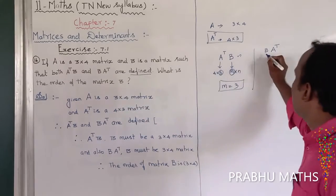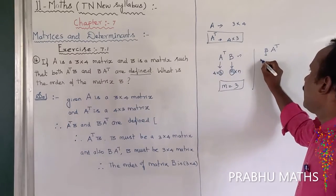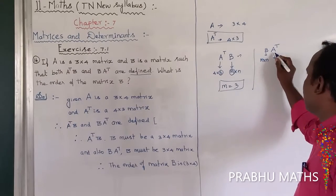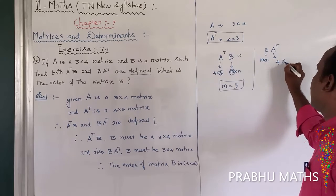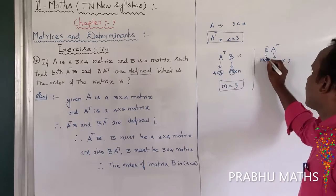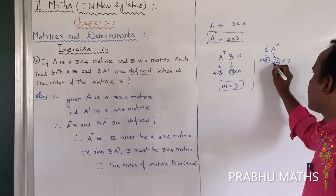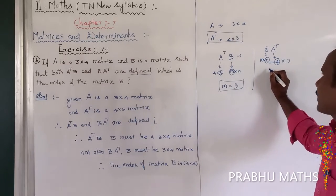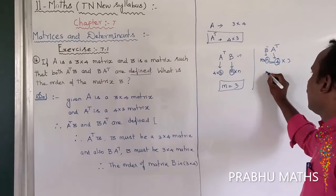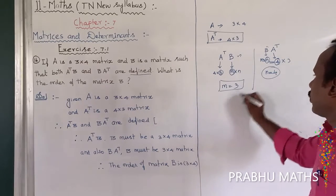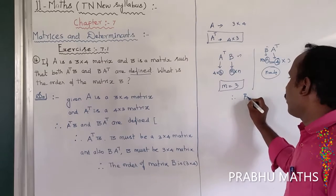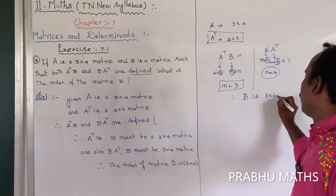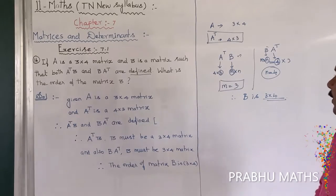Next, consider B into A transpose. The order of B is M by N, and the order of A transpose is 4 by 3. For this multiplication to be defined, the columns of B must equal the rows of A transpose. So N equals 4. Therefore, the order of B is 3 by 4.